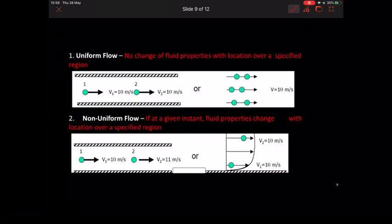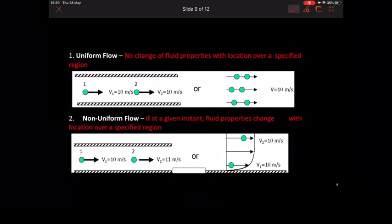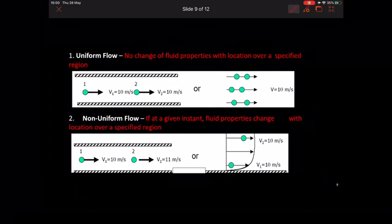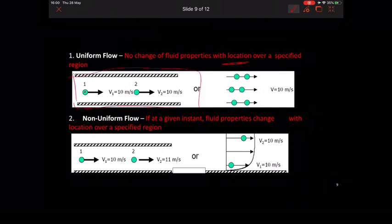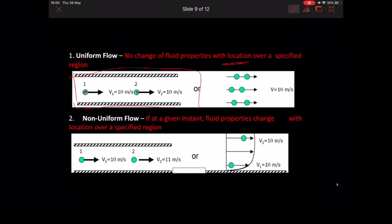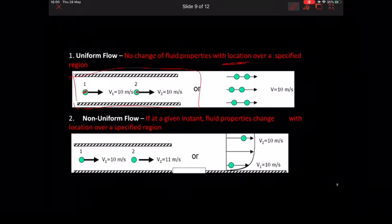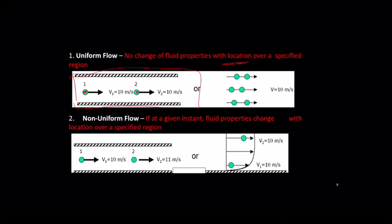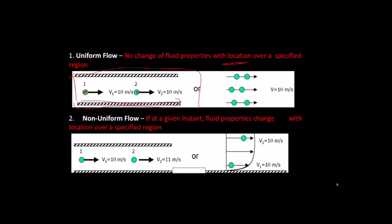Remember: steady and unsteady refer to no change with time, but uniform refers to no change with location. For example, in a pipe, point number one and point number two are two different locations. At point one the velocity reading is 10 m/s, and at point two the reading is also 10 m/s — no change with location, so it is uniform. This holds both horizontally and vertically across all points.